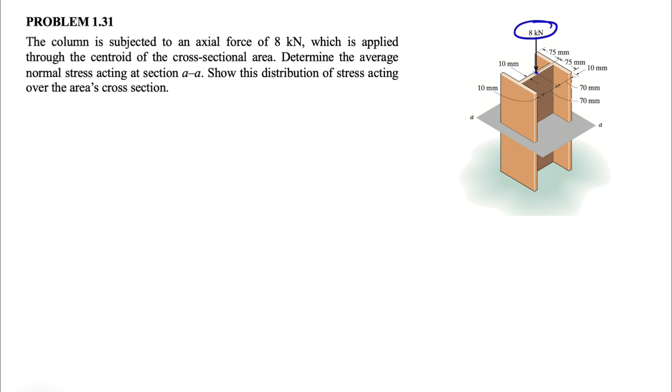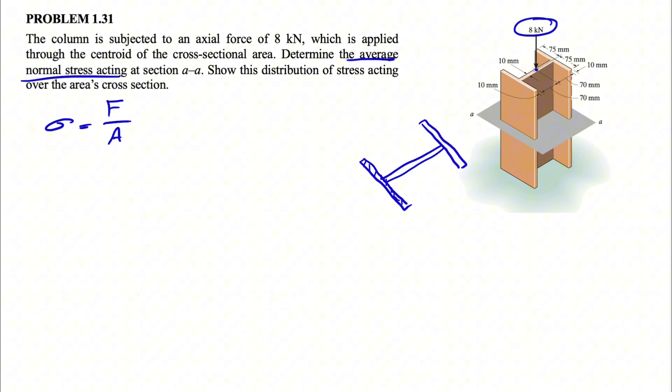First thing that we need to do, we are trying to find the average normal stress, meaning we have average normal stress equal to the force over the area of the cross-section. So the area of the cross-section that we have, we have all the dimensions, easy enough to find the area.